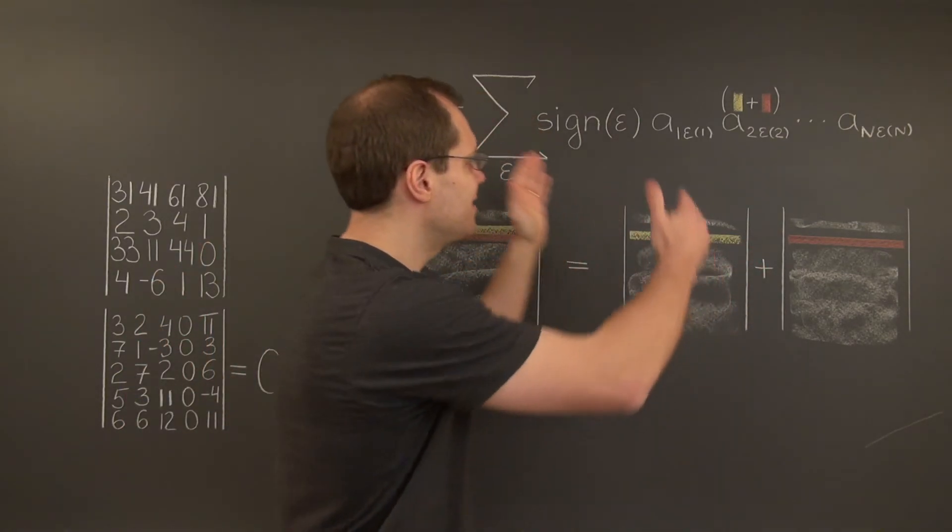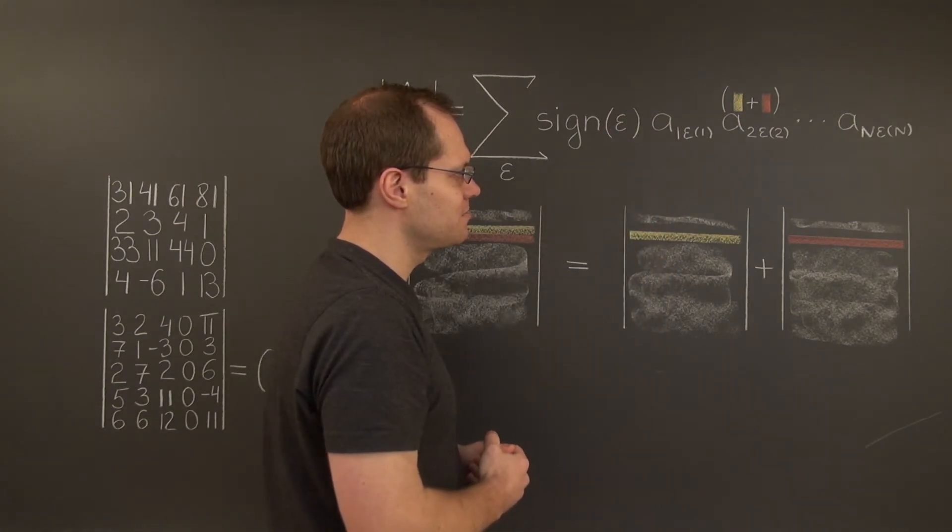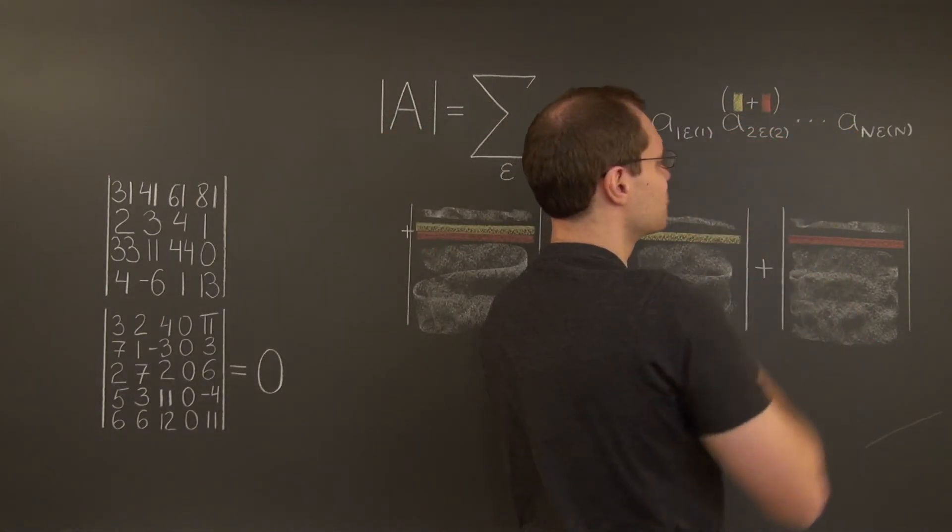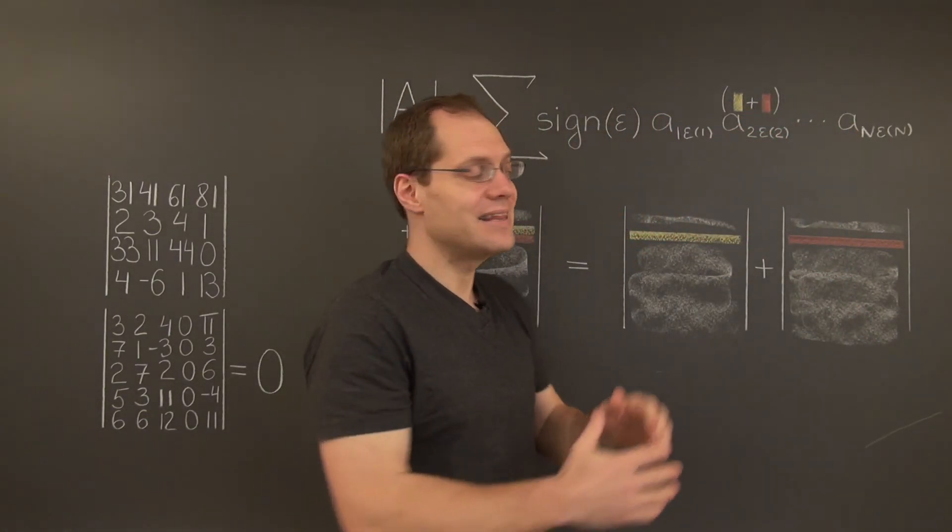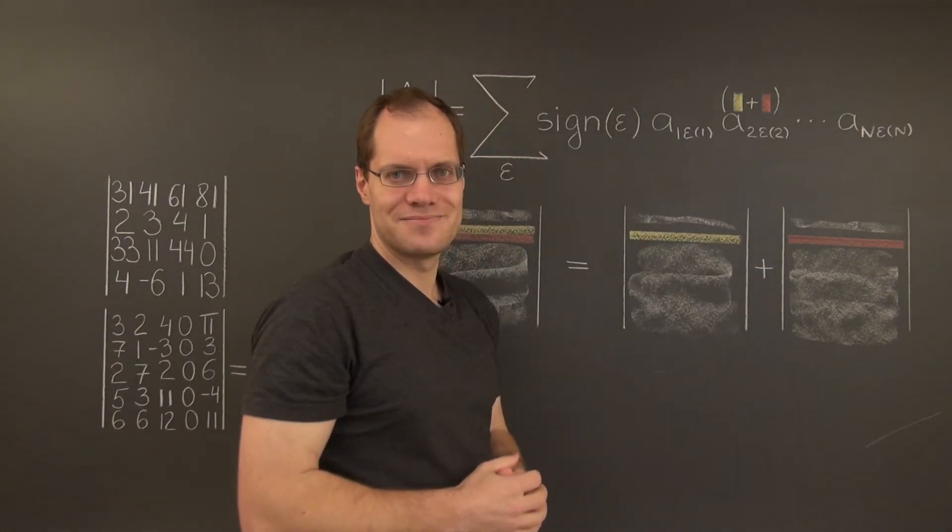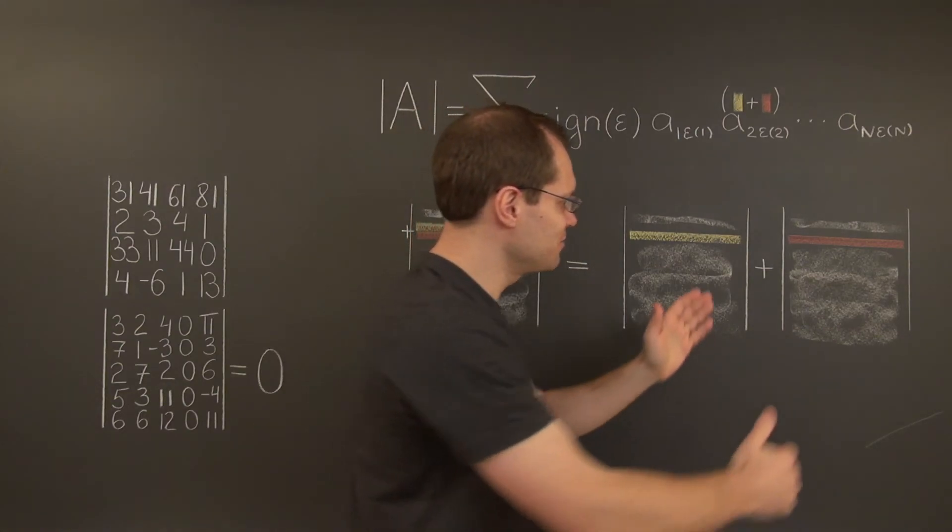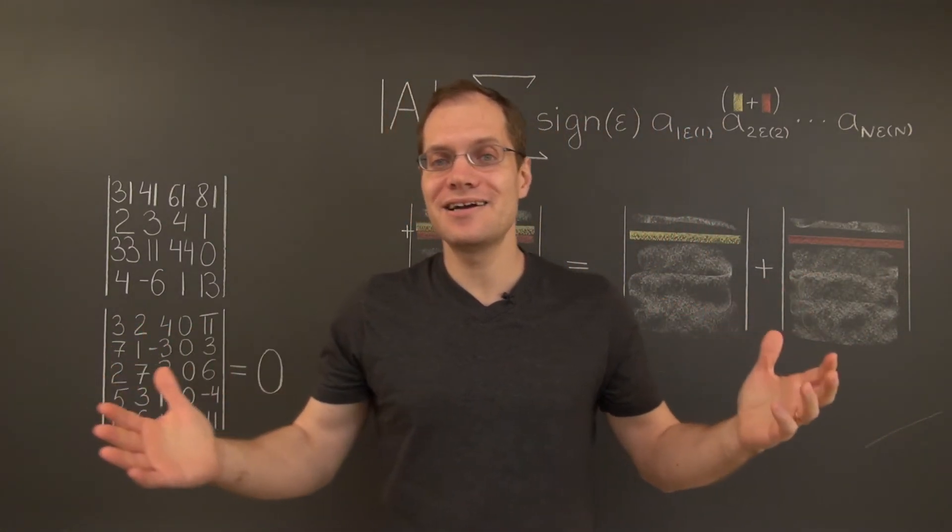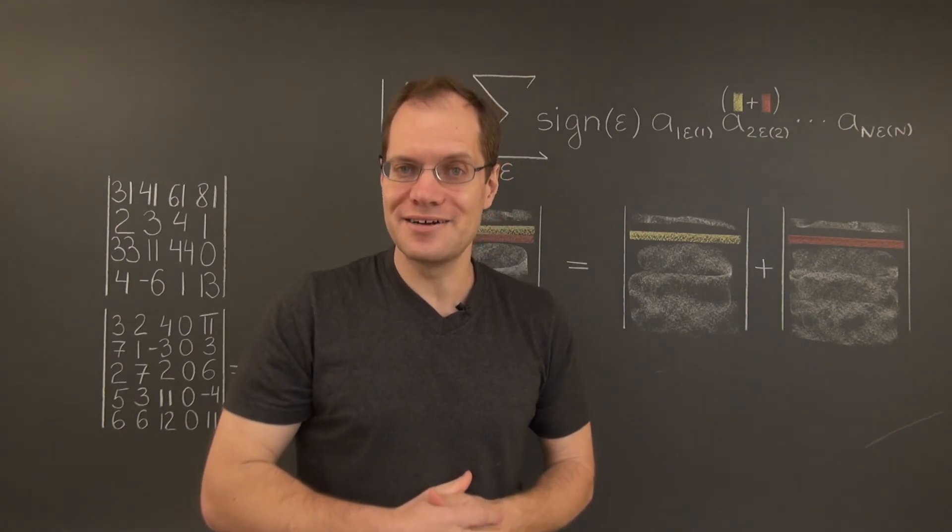And if we group together the n factorial yellow terms and the n factorial reddish terms, then the first group of terms will, of course, equal this determinant. And the second group of terms will equal this determinant. And that right there proves the first part of linearity.